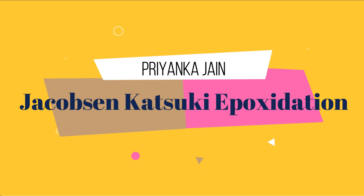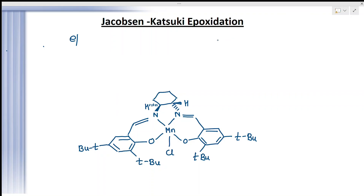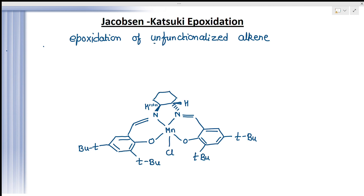This is a very important type of epoxidation reaction. It is used for the epoxidation of unfunctionalized alkenes. Unfunctionalized alkenes means the alkenes which do not have any functional group. If you have such a type of alkene and you want to do its epoxidation, then you will use Jacobsen reagent.